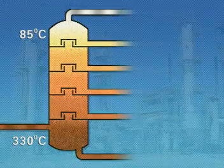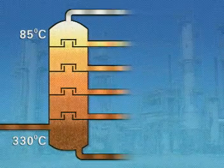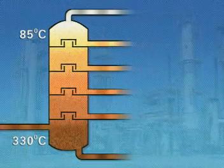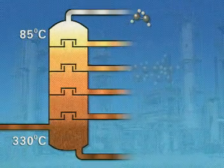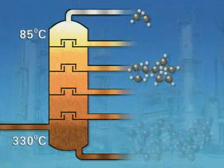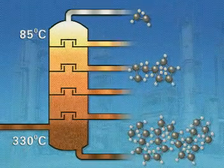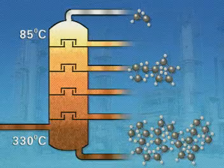Different hydrocarbons condense at different temperatures, running off at various levels. Those with lower boiling points are collected at the top. Those with higher boiling points run off nearer the bottom. The longer the molecules, the higher the boiling point.